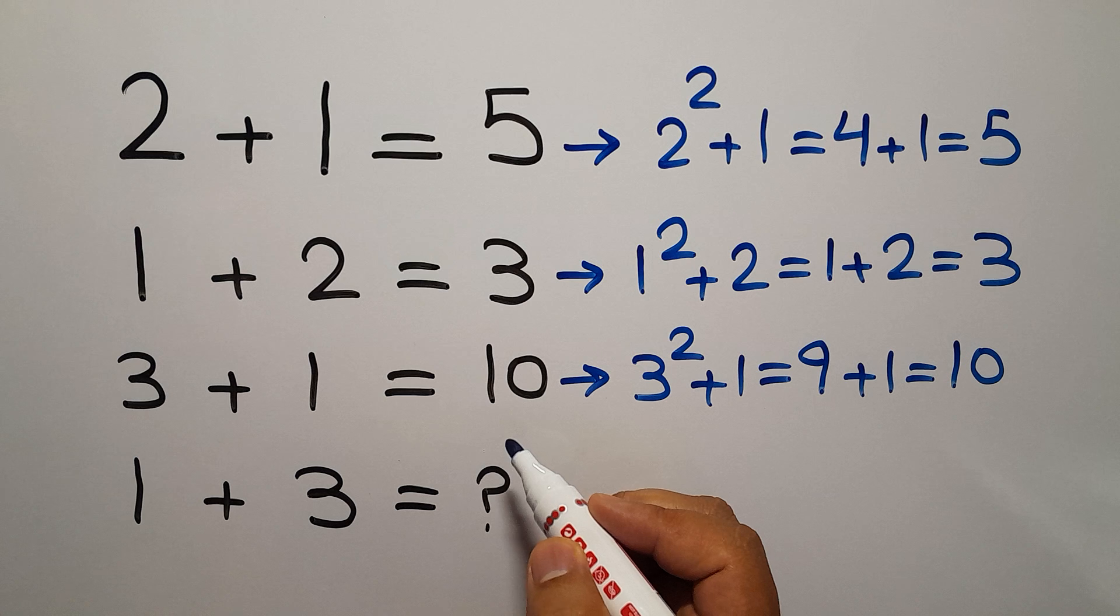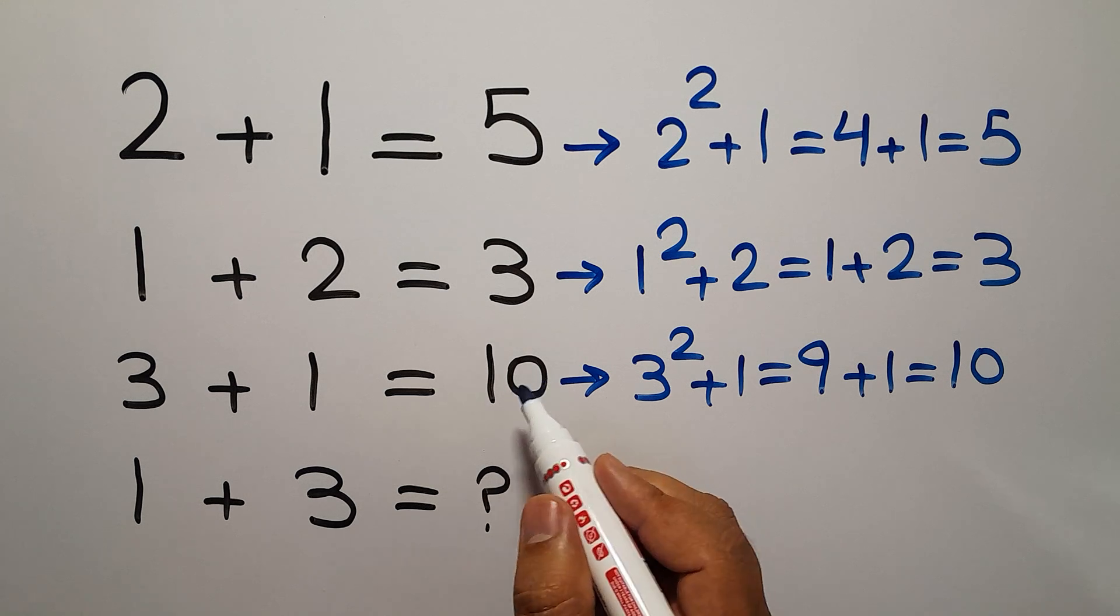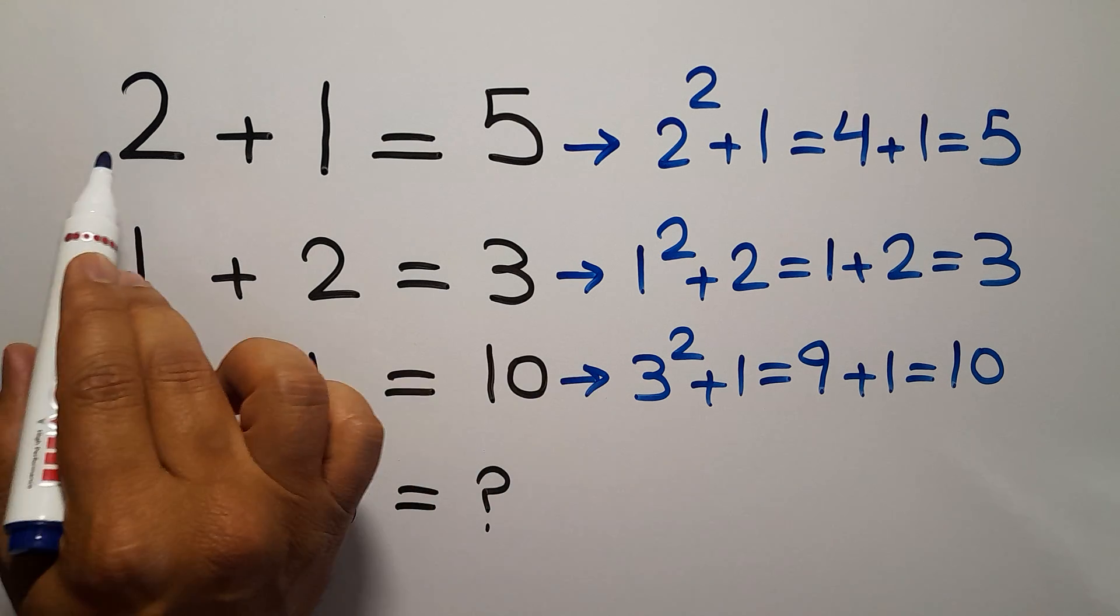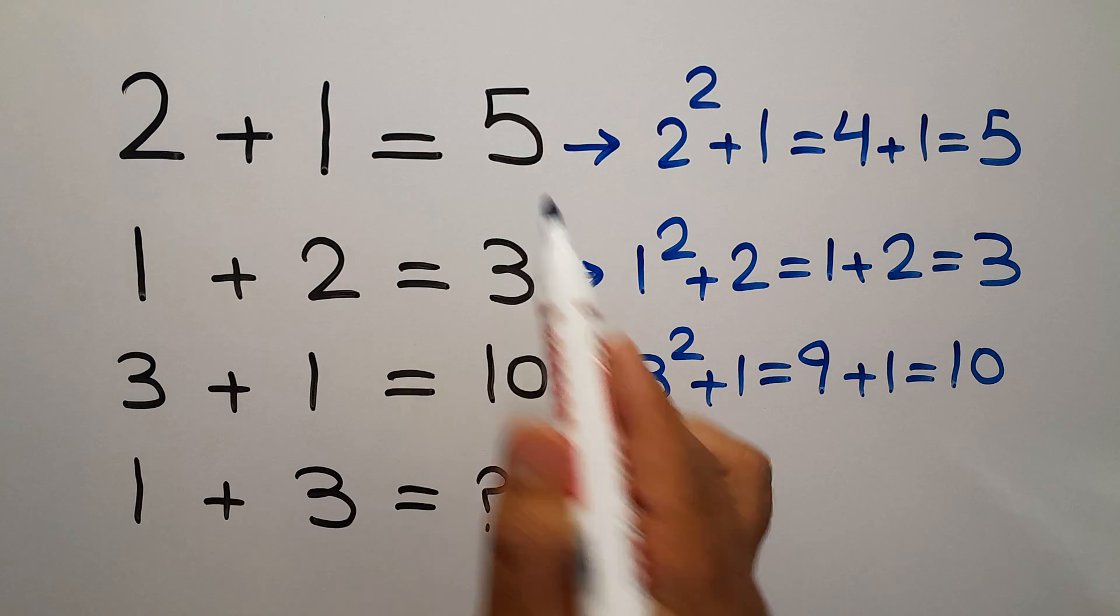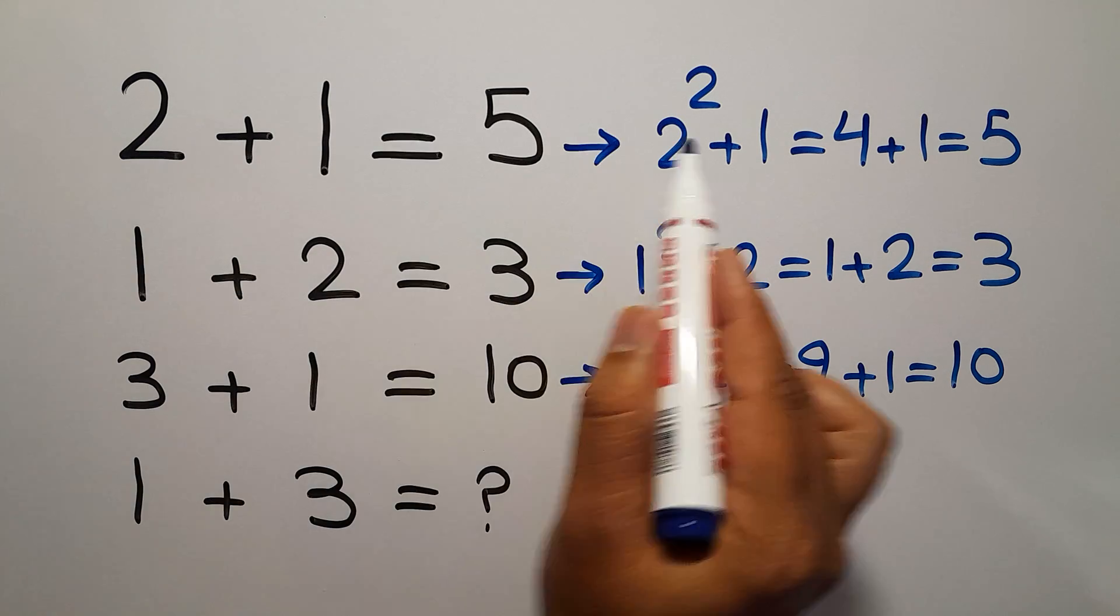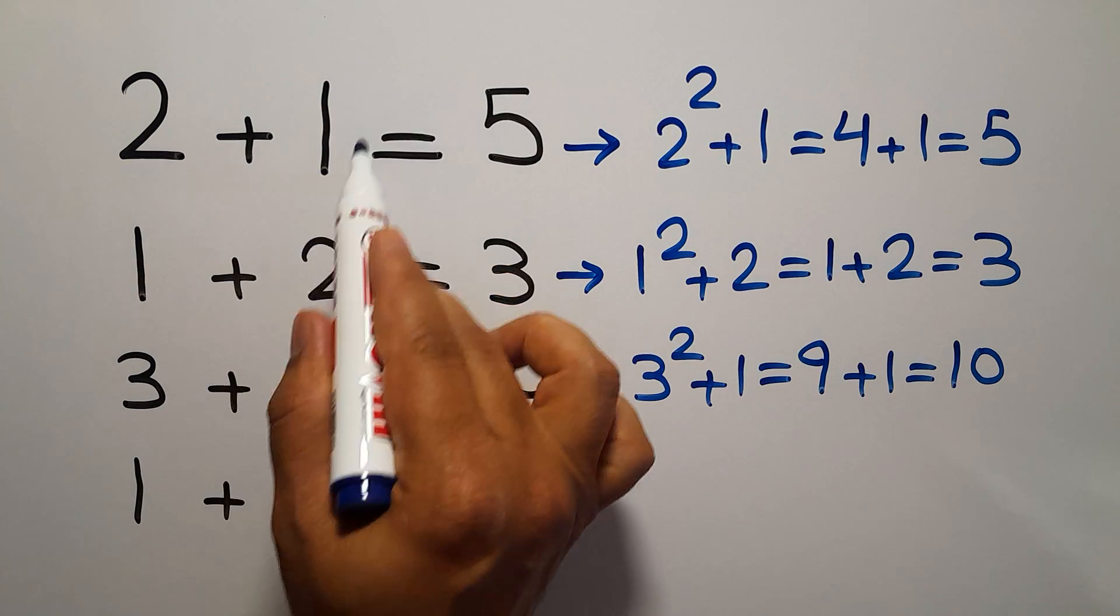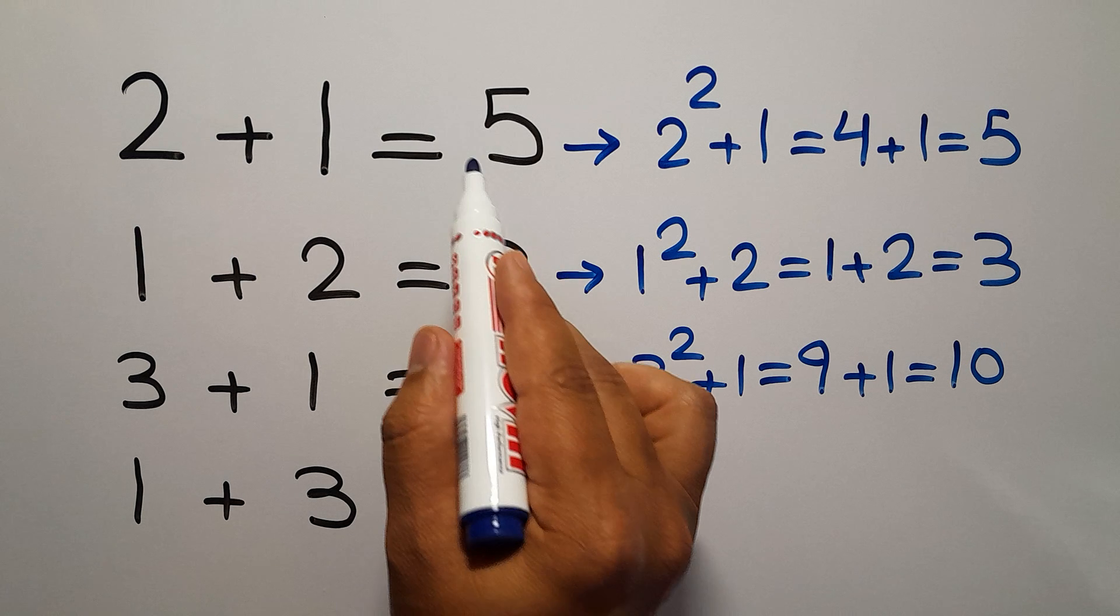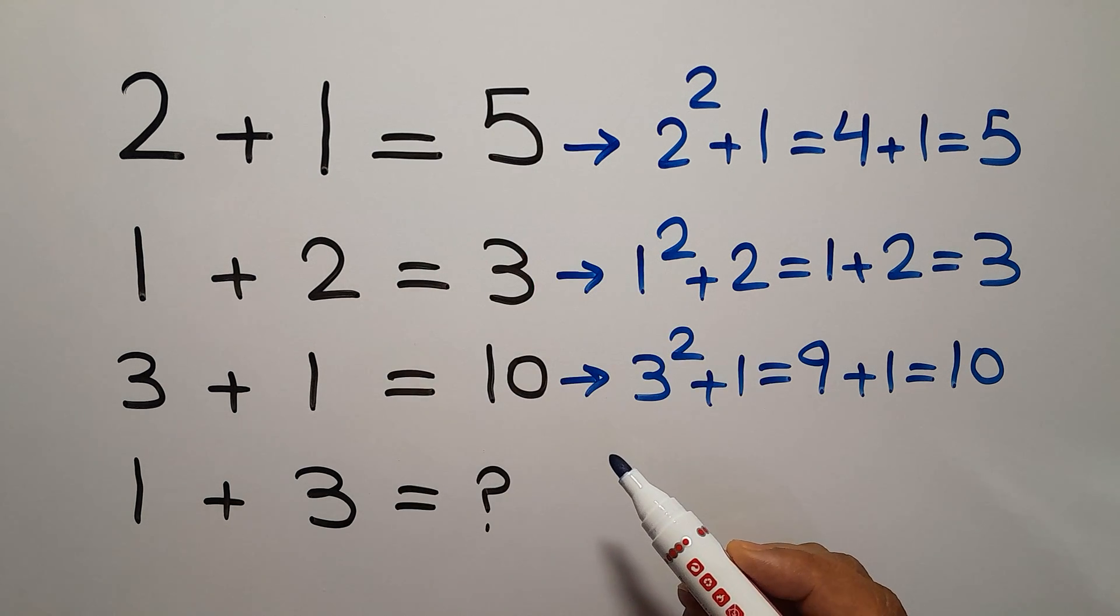So therefore, the pattern that exists here is the first number of each line to the power of 2 plus the second number gives us the right hand side number.